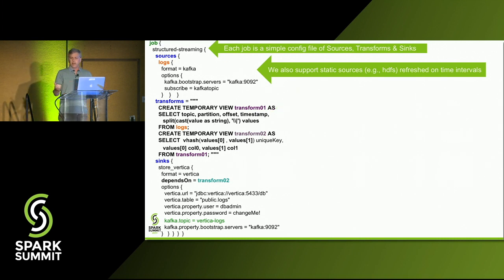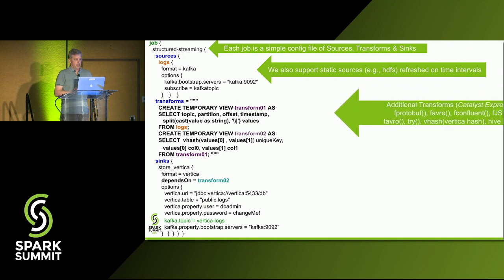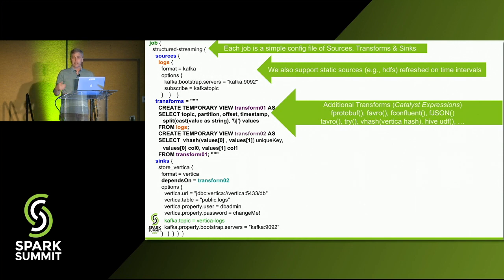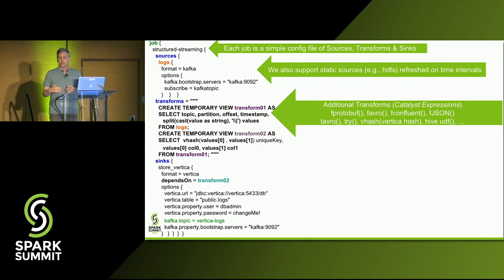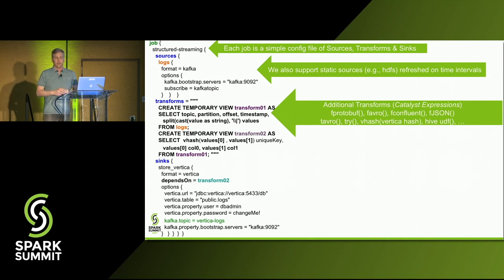In Kafka you have a key and a value — it's a byte array at the end of the day, some probably encoded data. In this example it's actually a delimited string. So in our first transform, what we're doing is converting that value, that byte array, to a string, and then splitting on it because it's vertical-bar-delimited messages. That creates a view, and then we can read from that view and select out those columns, getting them into the shape of the target system like a Vertica table.